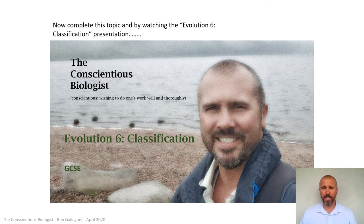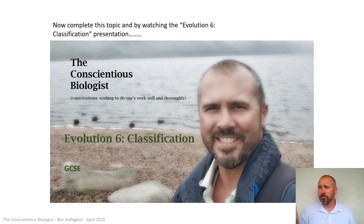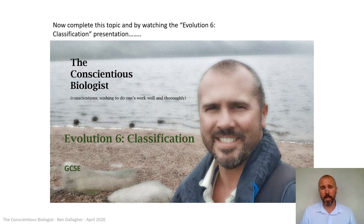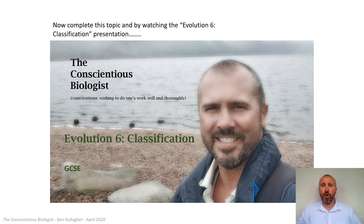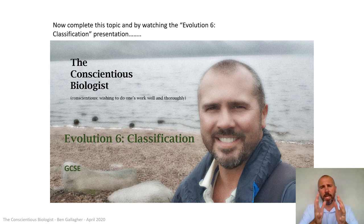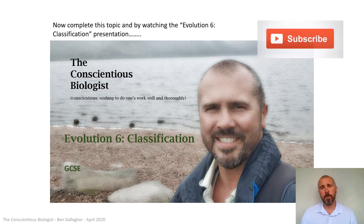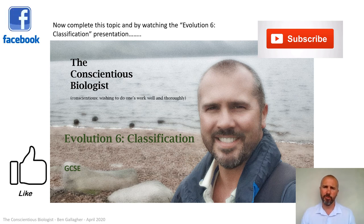Hopefully from seeing all that, there's very little doubt in your mind that evolution is a fact. Creatures have evolved over millions of years — some made it and are still around, a lot went extinct. From here, complete your study of the evolution topic by going to evolution six on classification. Now that we've said how many billions of different species have evolved and how much variation there is, we as humans like to put order onto that — we've invented systems to classify and group things. Please do subscribe to my channel if you haven't done so already, like this video if you find it useful, and head over to my Facebook page for useful snippets of biology.